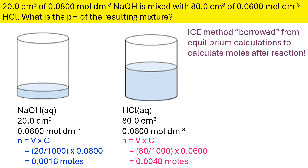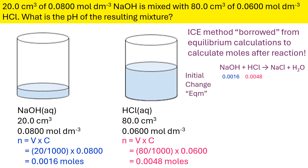I'm going to borrow the ICE method from the equilibrium calculations to calculate moles after the reaction. Putting in the equation, you can see there's a one-to-one mole ratio between them, and our two initial values go in there. The change will be what happens when they react. The sodium hydroxide will lose all of it because there's a larger amount of HCl than sodium hydroxide to start with, so sodium hydroxide is essentially behaving as the limiting reagent here.